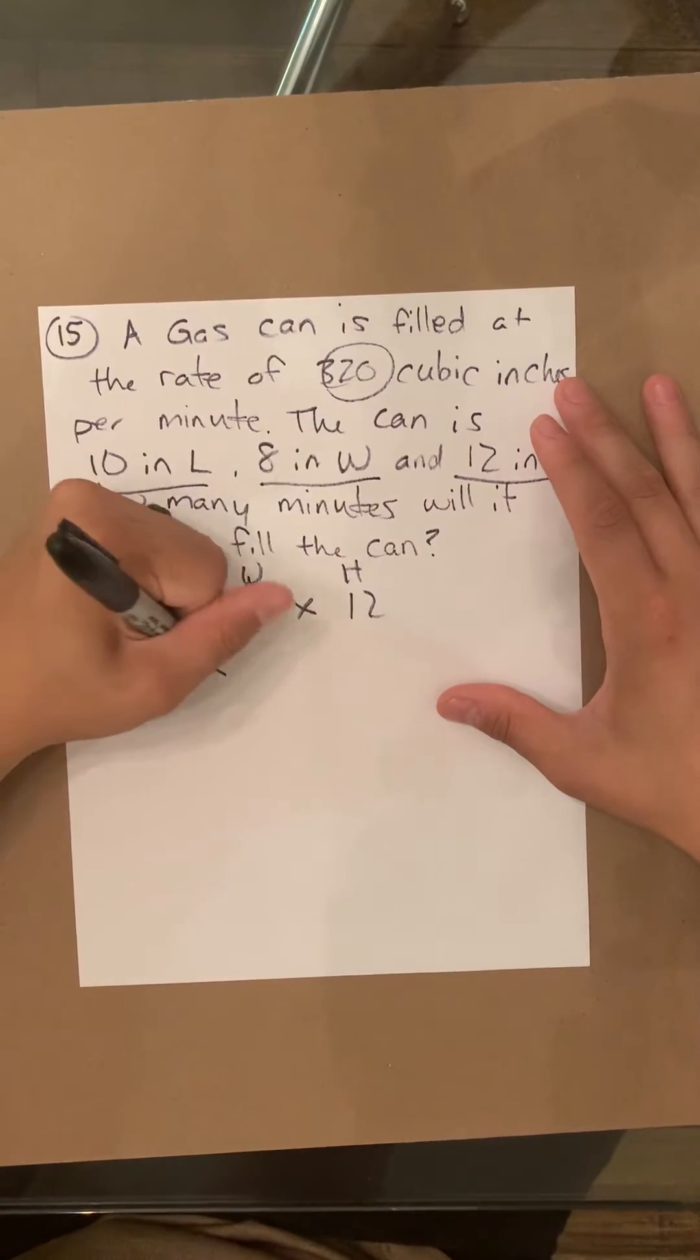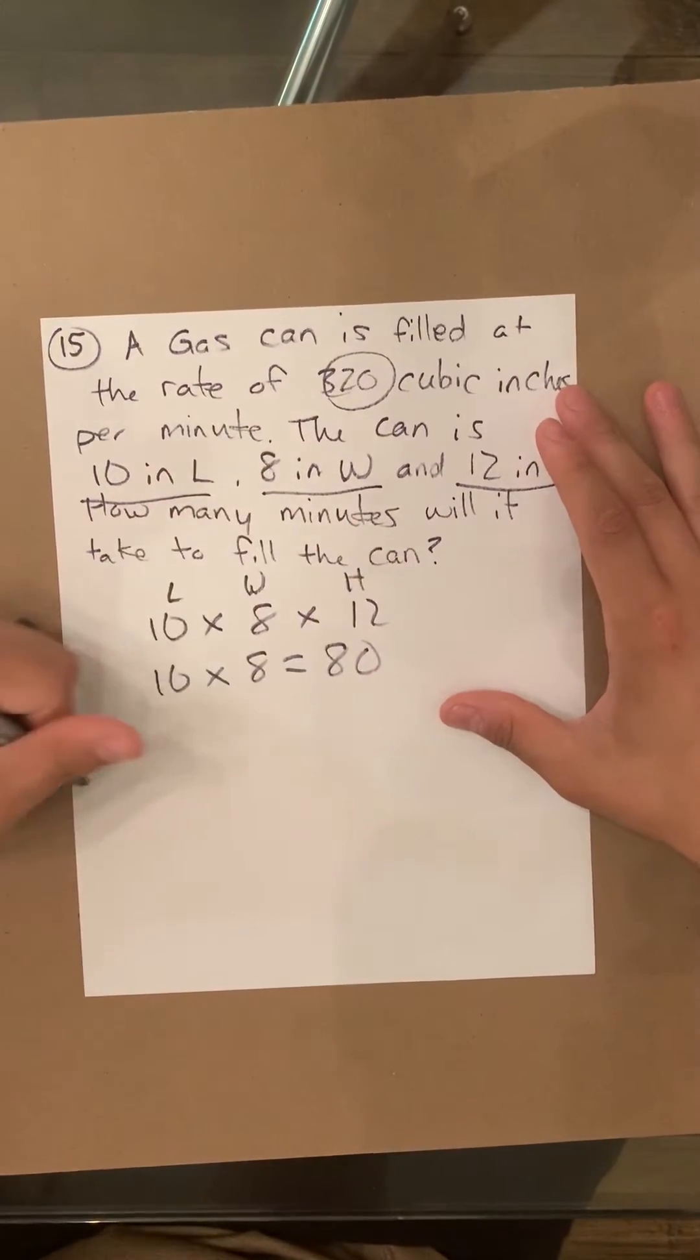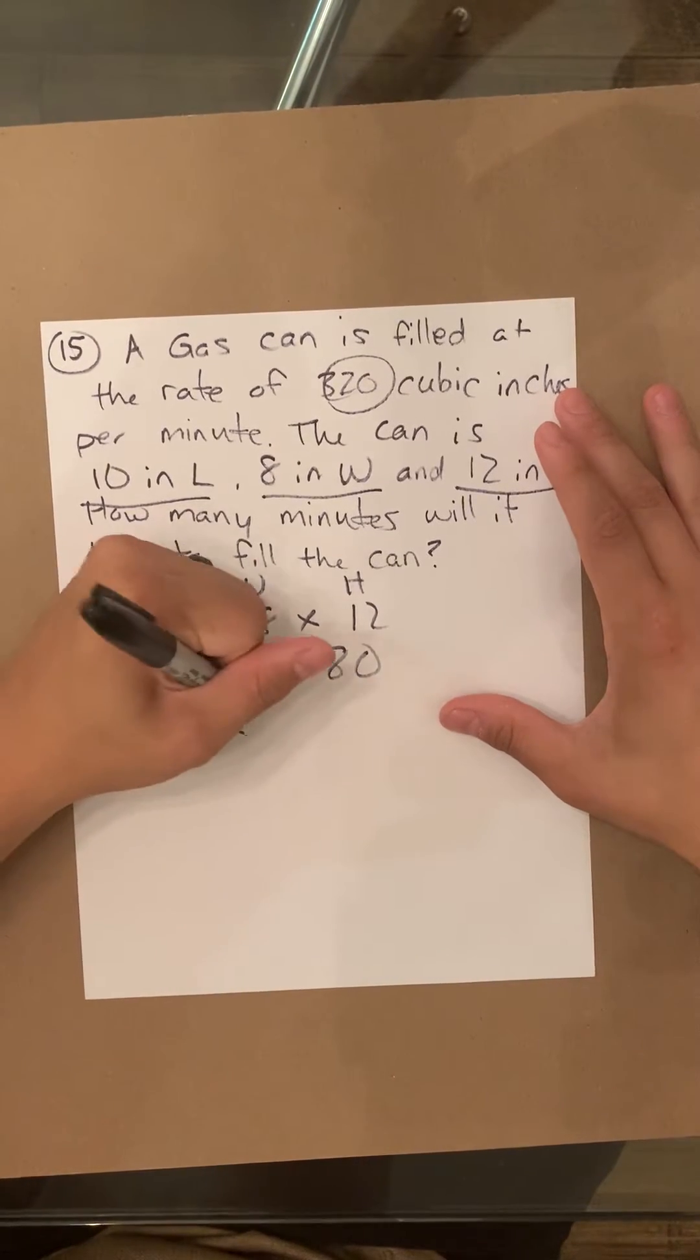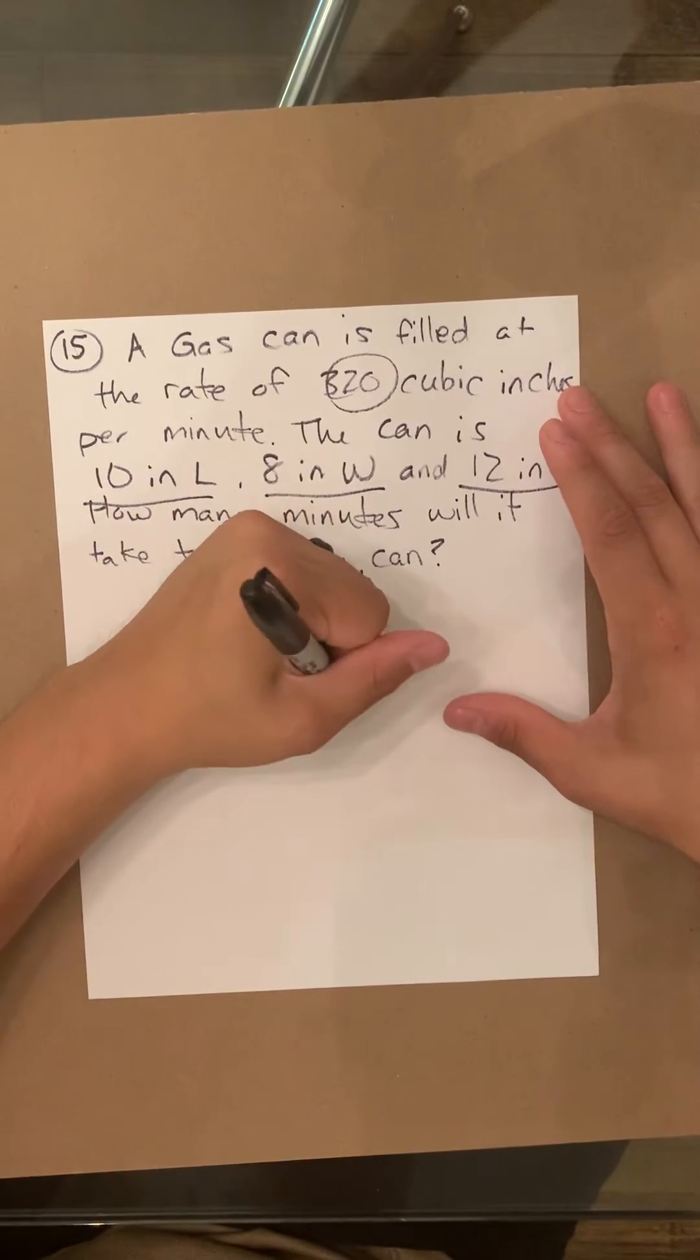So first off, 10 times 8 equals 80. Then it's 80 times 12. That's going to equal 960. Let me show it real quick.